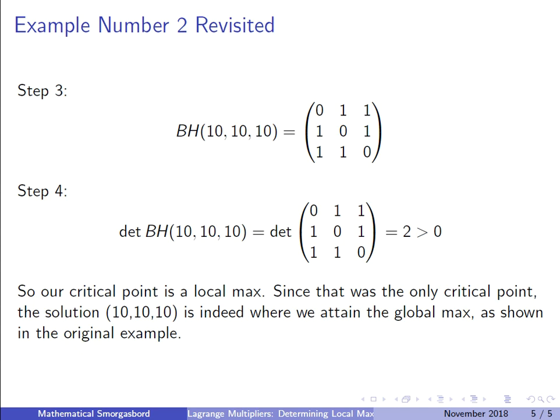And this is our only critical point, so that means that this solution is actually the global maximum. So the global maximum, or the maximum product, does occur when x equals 10 and y equals 10. So the maximum product is 100.